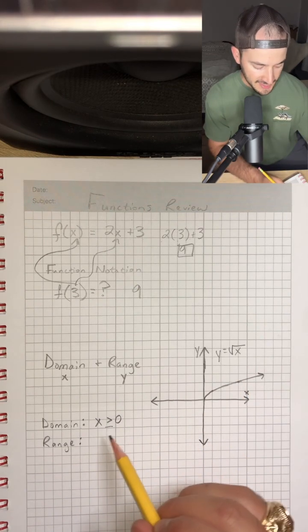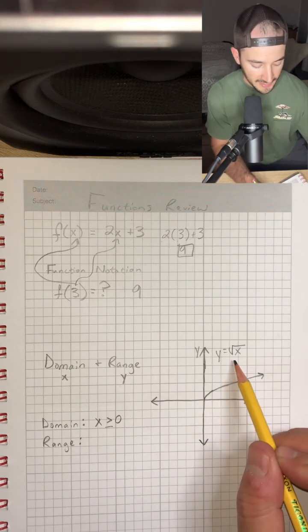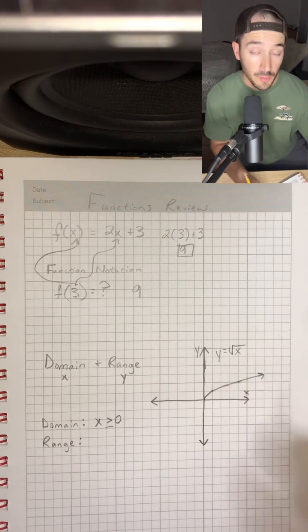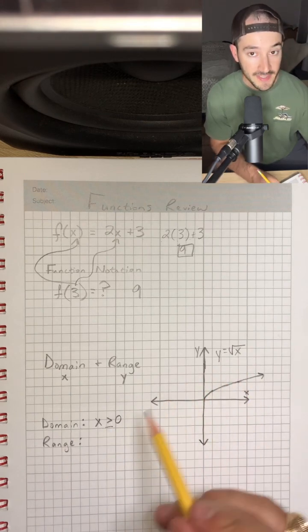Now, the reason the domain is x is greater than or equal to 0 is because we can't have any negative numbers. You can't take the square root of a negative number without getting some imaginary number. So that's why this makes sense.